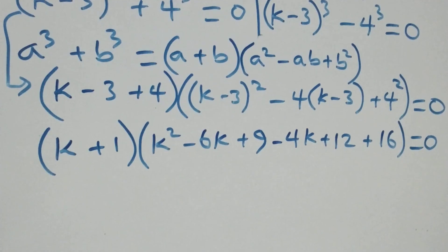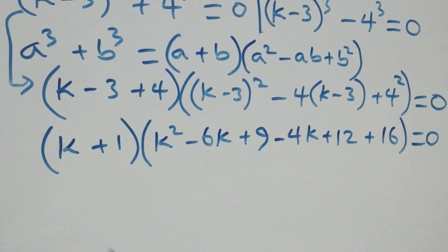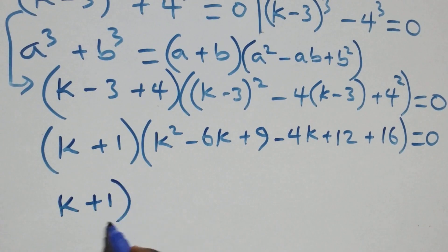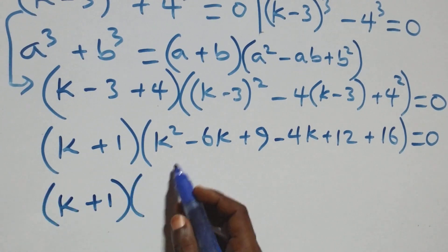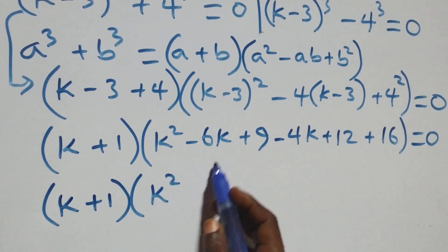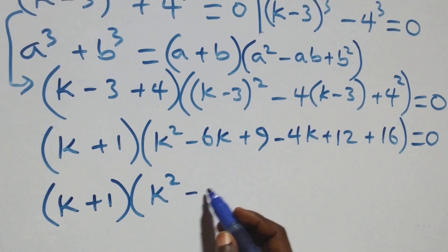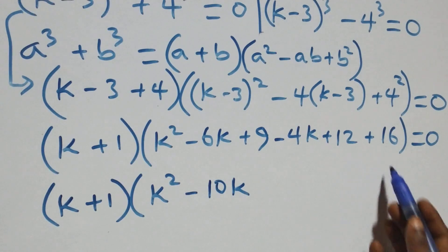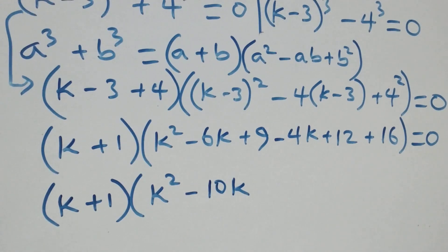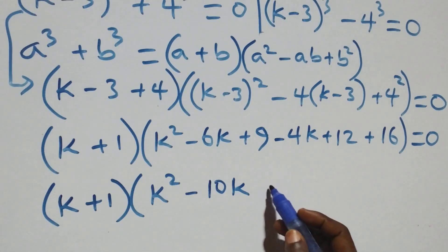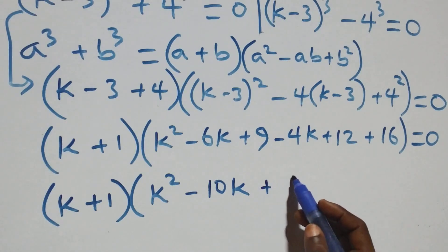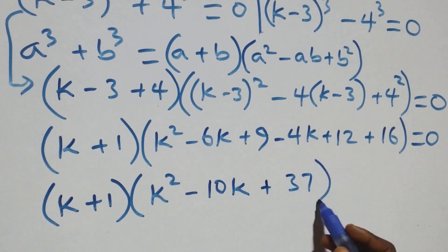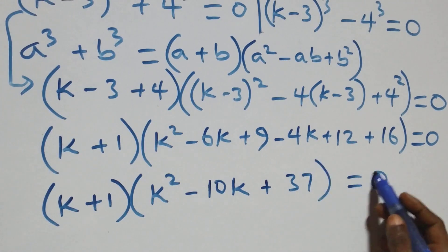This is the same as (k + 1) times [k² - 6k - 4k gives minus 10k, then 12 plus 16 is 28, plus 9 gives plus 37], close bracket, equals zero.